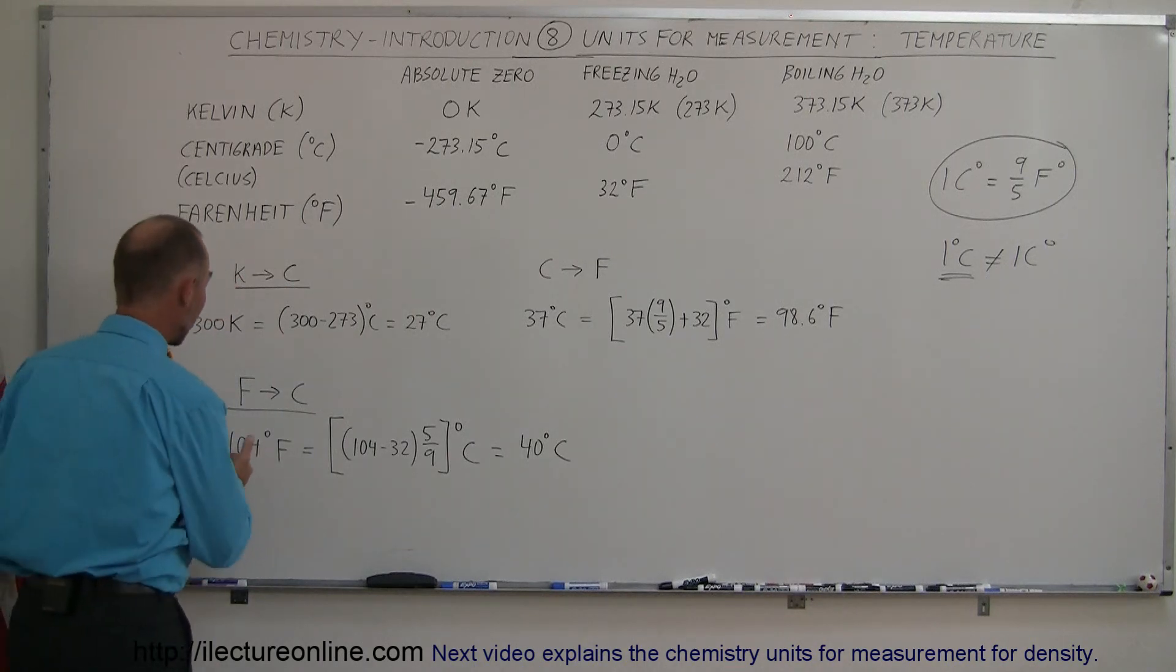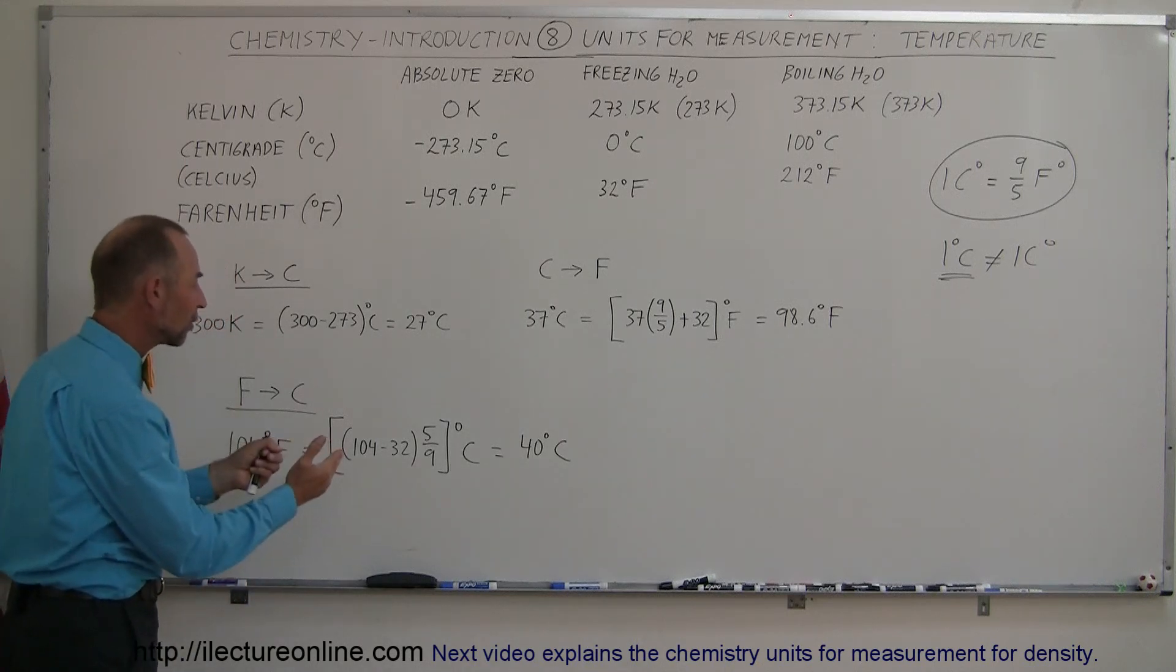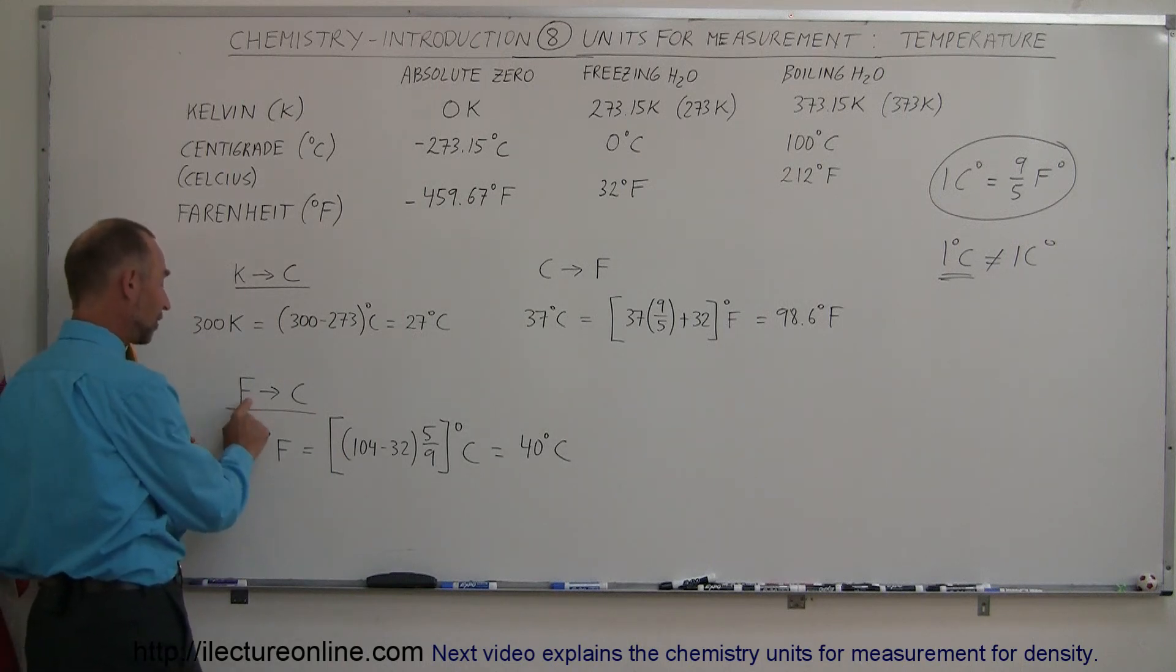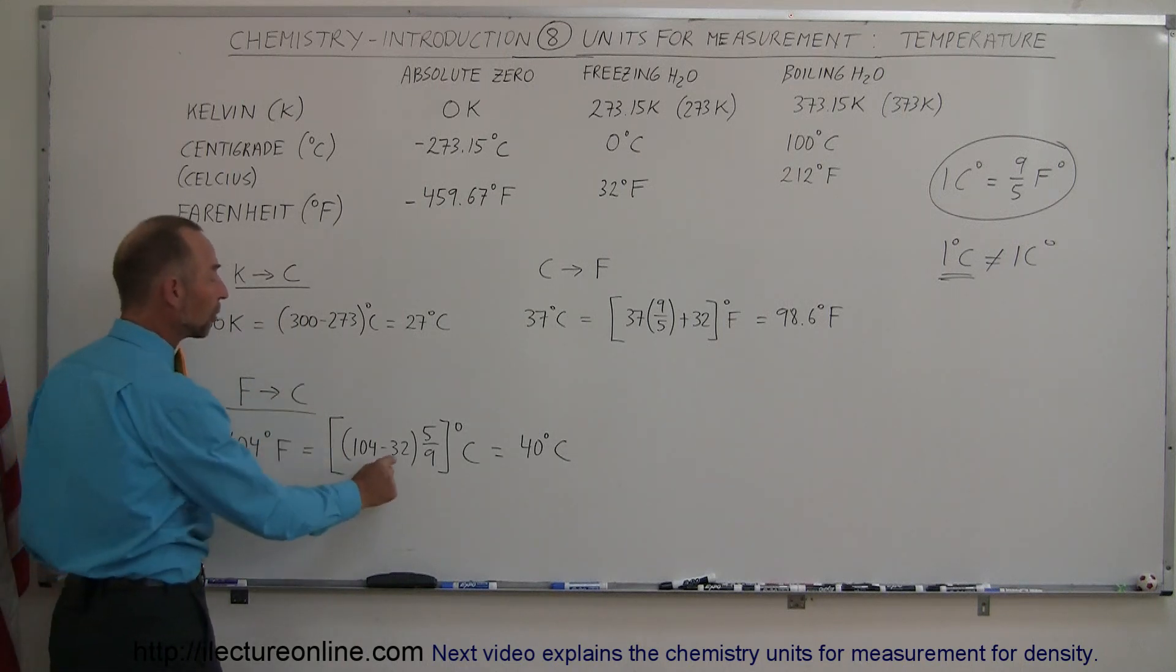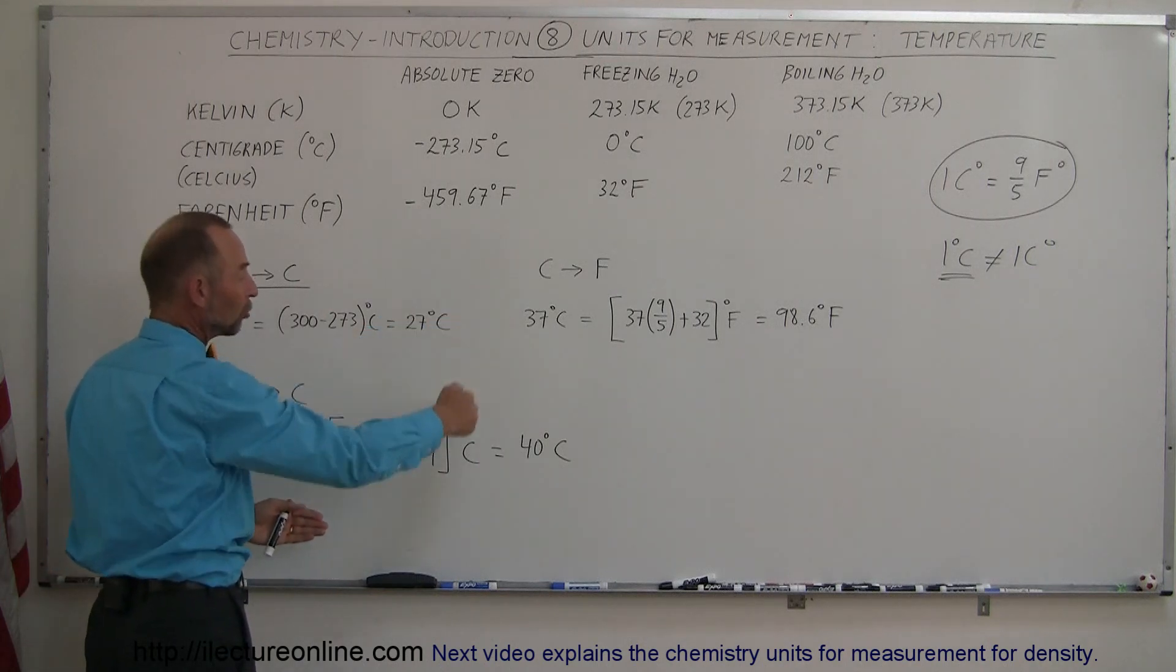Let's say you measure a temperature of 104 degrees Fahrenheit, I guess that would be a high fever or a hot day in the desert. How does that compare to centigrade degrees? Well, what you have to do here to convert back from Fahrenheit to centigrade is first subtract the 32 from the number.